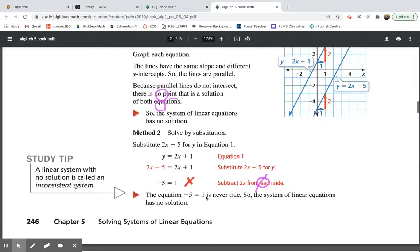Then they show you doing the same problem by substitution. Since they were both already solved for y, you could just pick one of them to plug into the other. So they took and said 2x minus 5, and they plugged it into the other equation for y. So then you have to get your x's together, so you subtract it across the equal sign, and they cancel. And you're left with negative 5 equals 1, because our variable's canceled out. Well, negative 5 does not equal 1, nor will it ever. So that's another way you know that it's no solution.